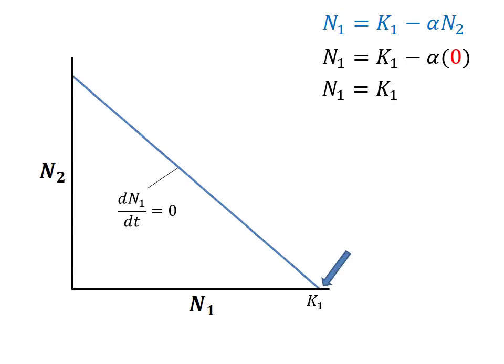This probably isn't surprising to you. If there were no individuals of species 2, there would be no competition, and species 1 would be able to reach its carrying capacity and stabilize at that level.